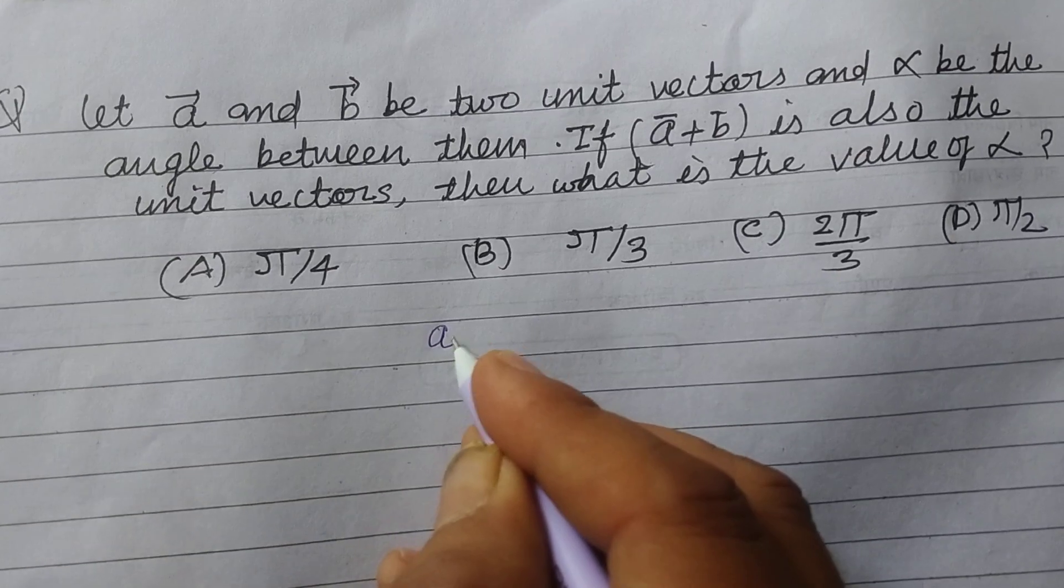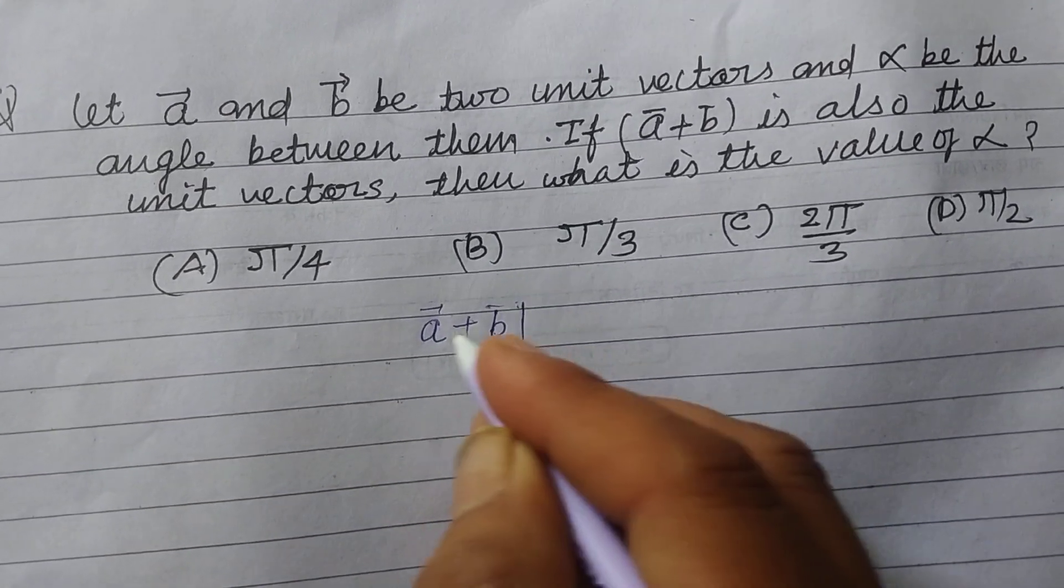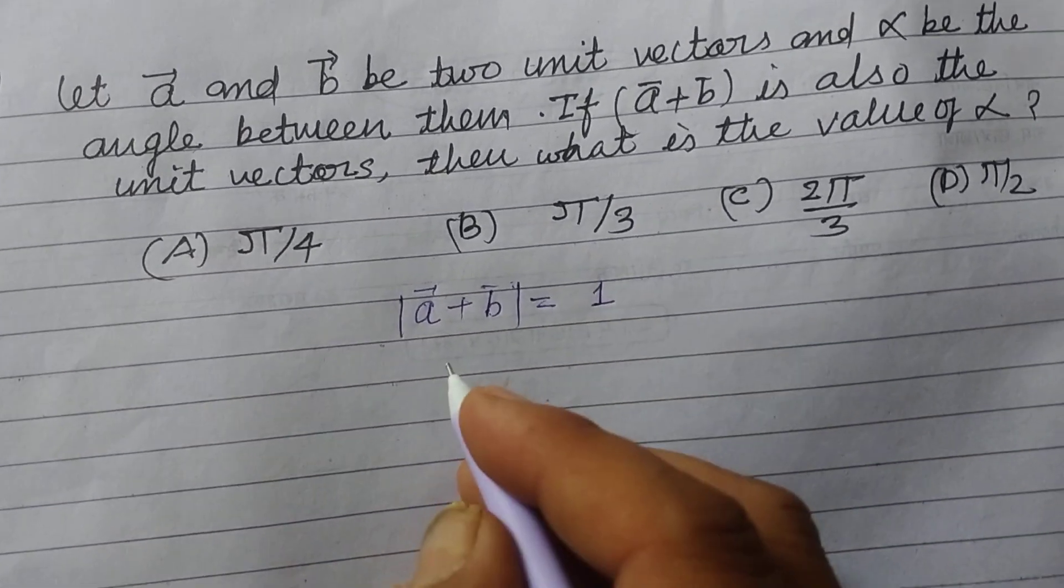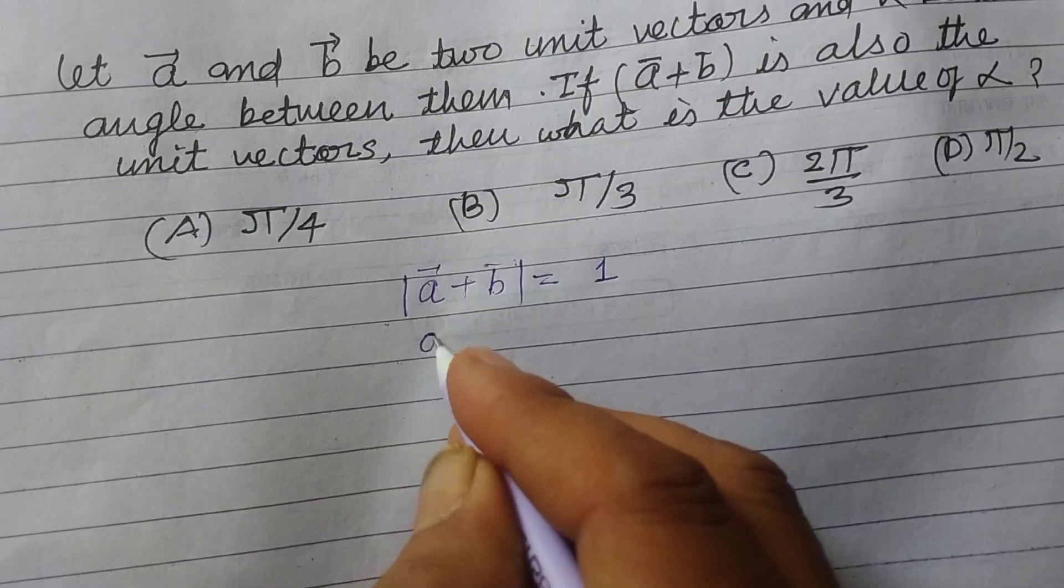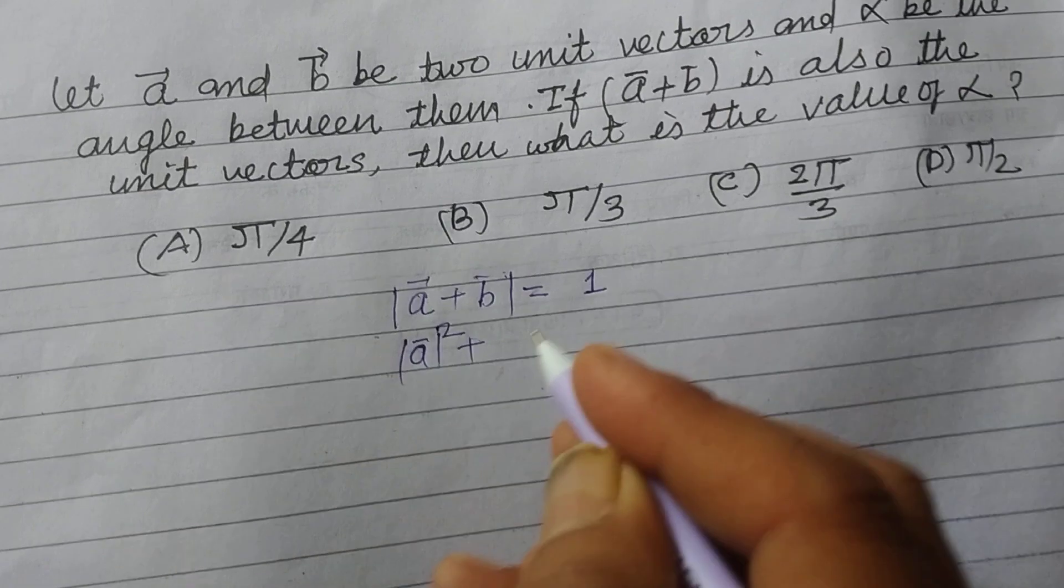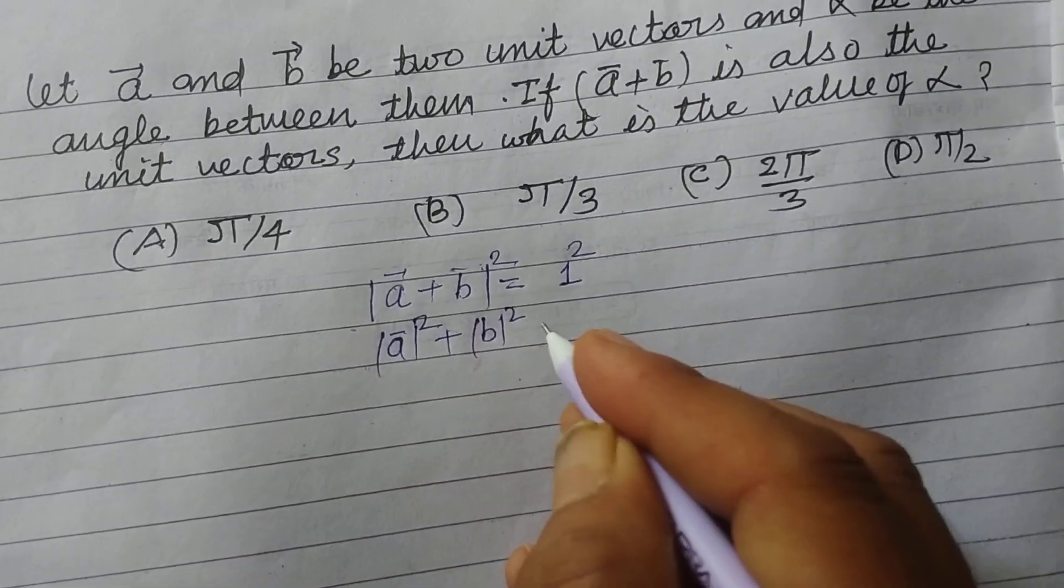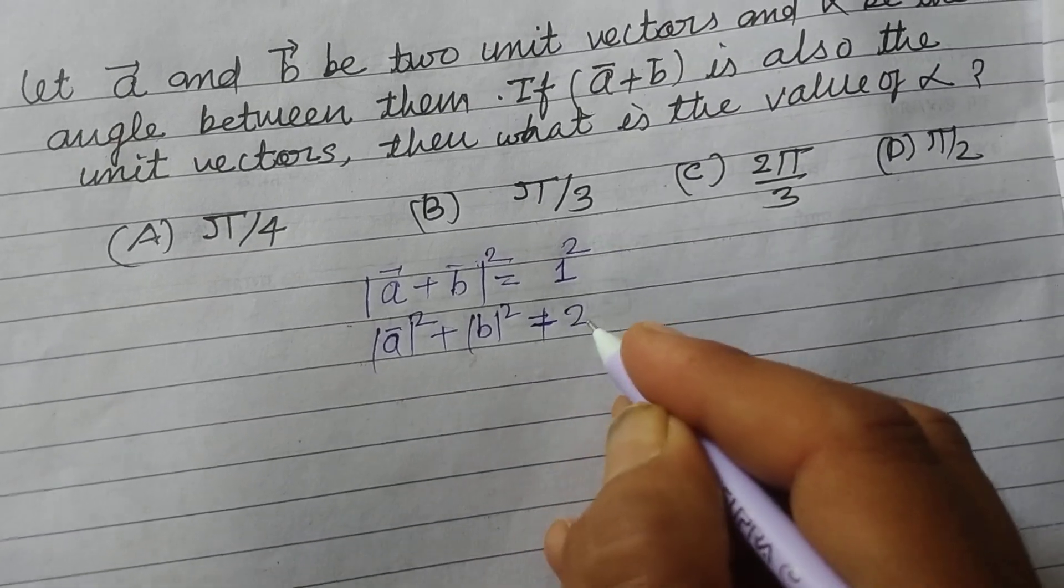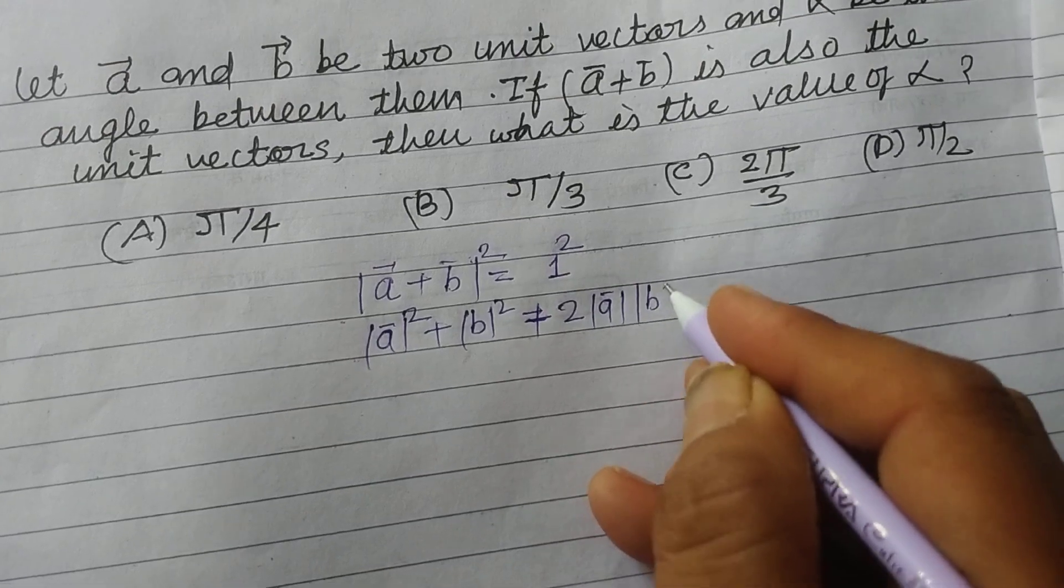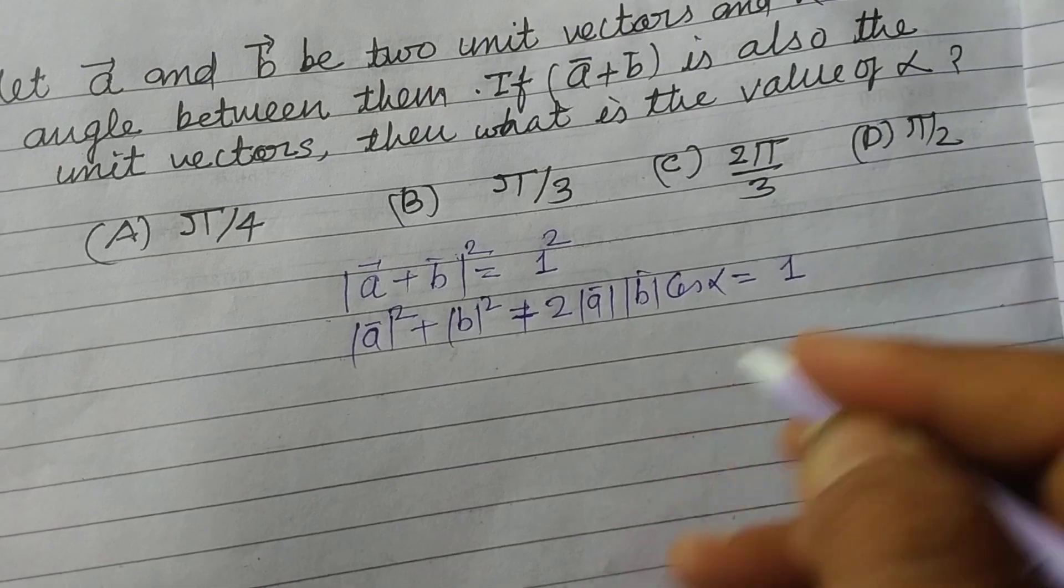So students, here it is given that vector A plus vector B, when we take its magnitude, is a unit vector. So squaring this: magnitude of A squared plus magnitude of B squared plus 2 times magnitude A times magnitude B times cos alpha equals 1.